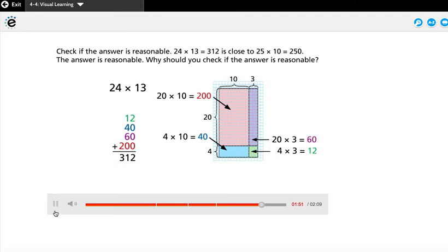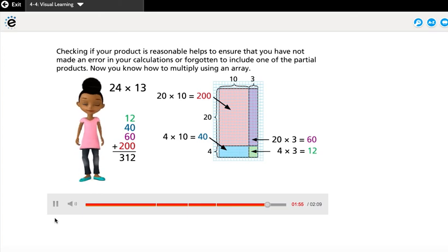Why should you check if the answer is reasonable? Checking if your product is reasonable helps to ensure that you have not made an error in your calculations or forgotten to include one of the partial products. Now you know how to multiply using an array.